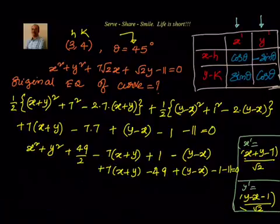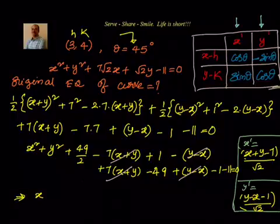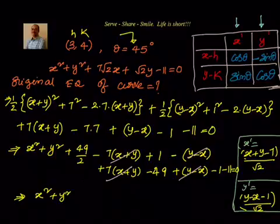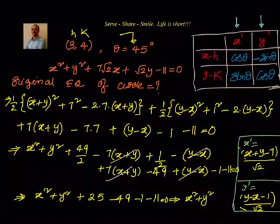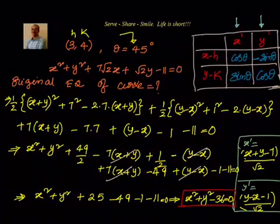Simplifying the constants: 25 − 49 − 1 − 11 = −36. So the original equation is x² + y² − 36 = 0.